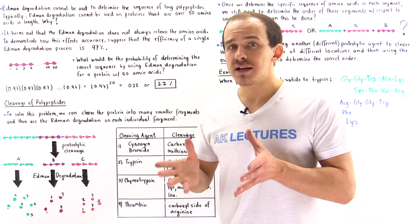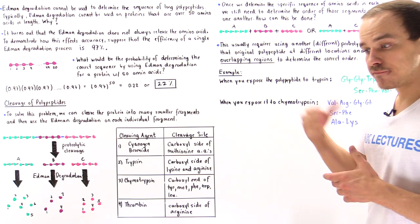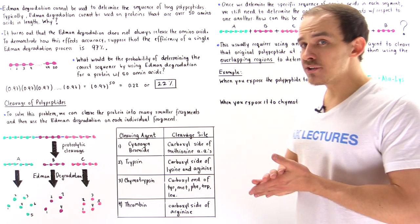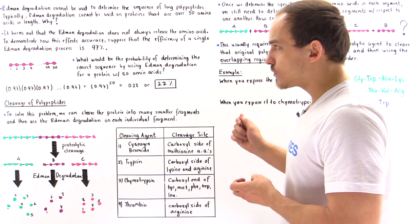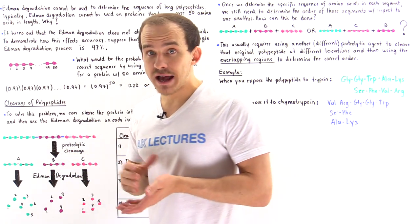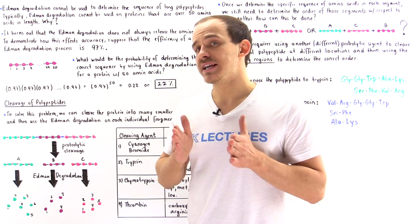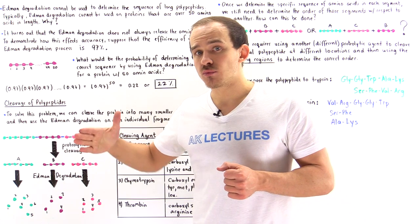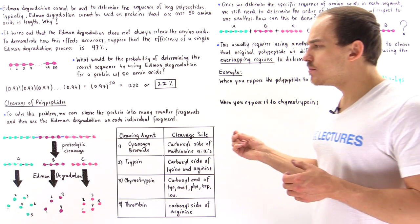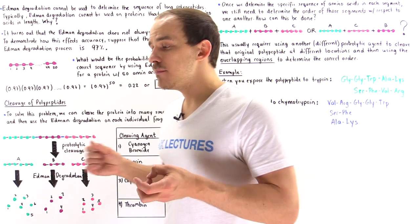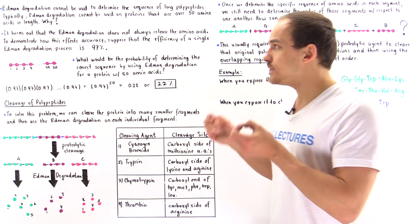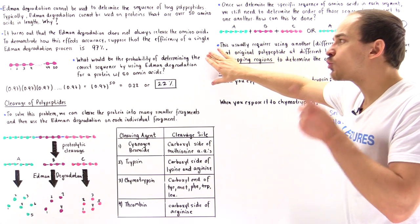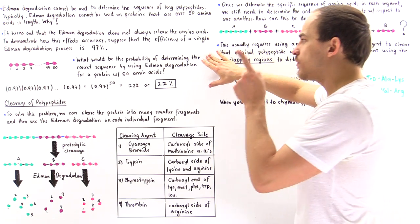It turns out that the Edman degradation process in some cases does not release that first amino acid in the polypeptide chain. To demonstrate how this affects accuracy, suppose that the efficiency of a single Edman degradation step is 97%. That means every time the process takes place, there is a 97% chance it will work correctly — labeling and releasing that amino acid. This isn't a problem with a small number of amino acids, but what happens if we have 50 amino acids? We want to calculate mathematically what the probability is of determining the correct sequence for a protein with 50 amino acids.